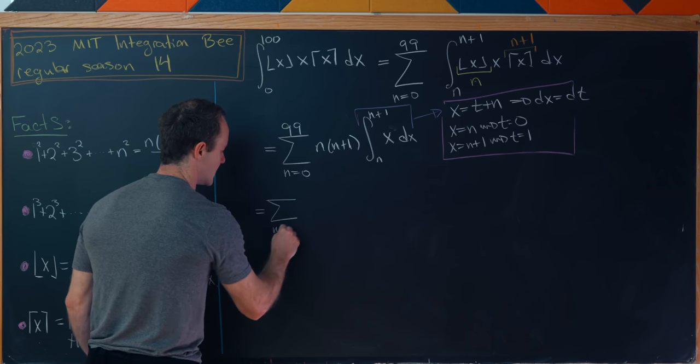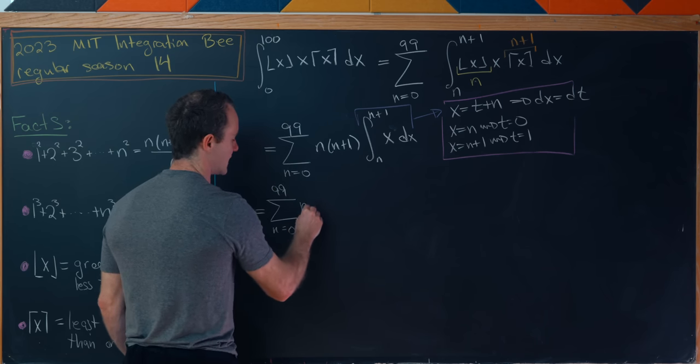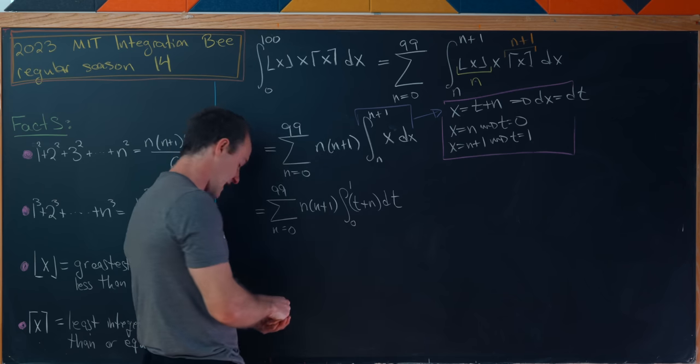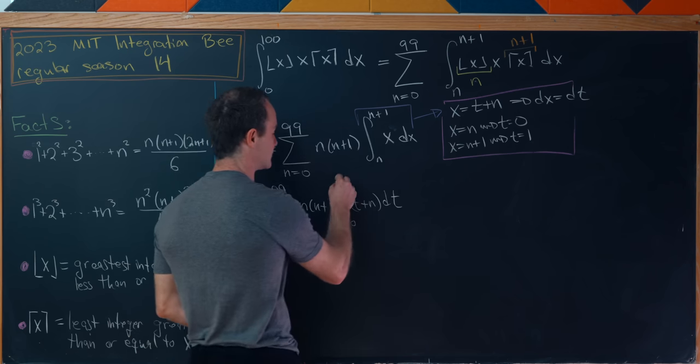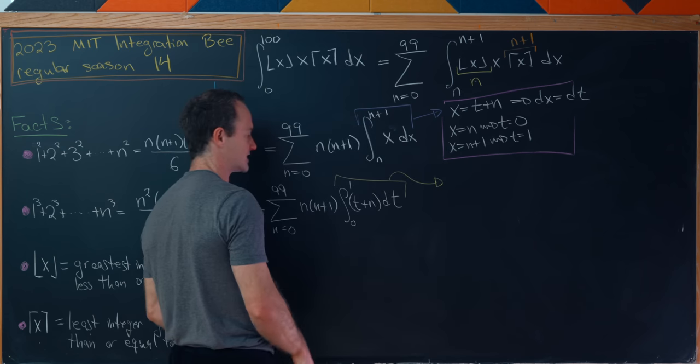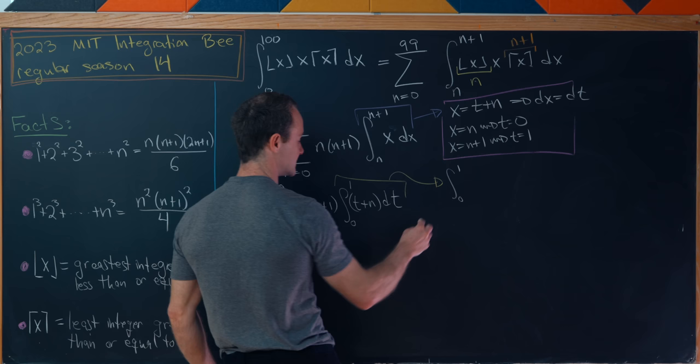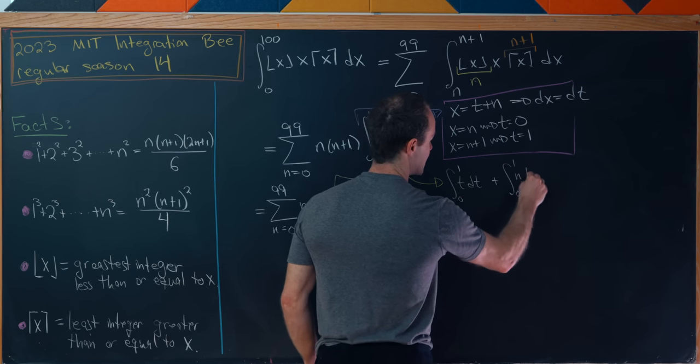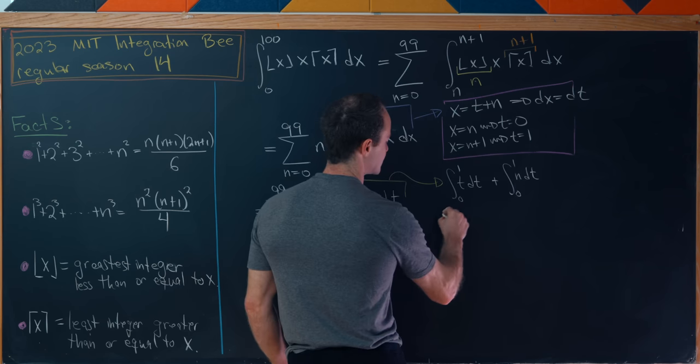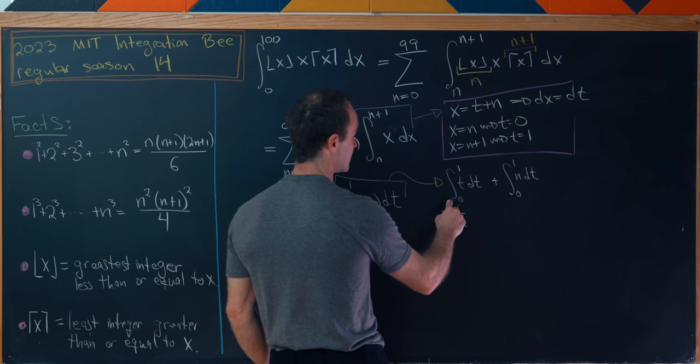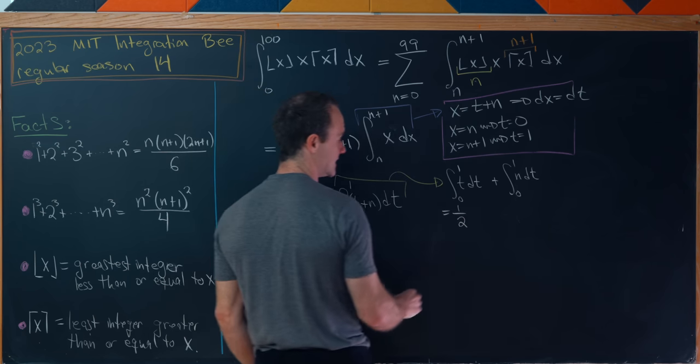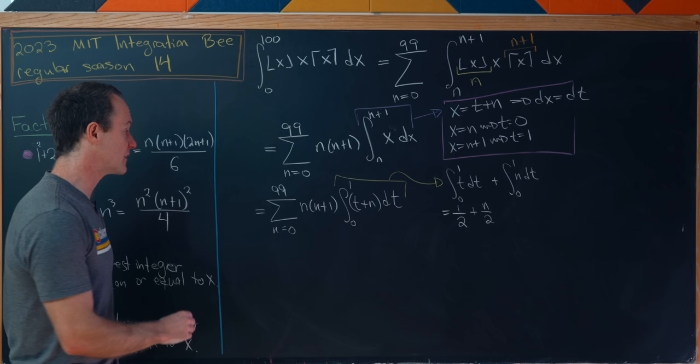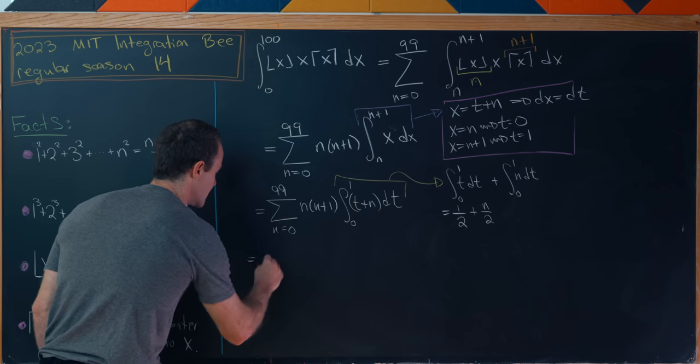And now plugging this all into our given integral will give us the following setup. We have this sum as n goes from 0 to 99, we still have n times n plus 1, but now we'll have the integral from 0 to 1. I think it's going to be advantageous to split this up. So that splits up into the integral from 0 to 1 of t dt plus the integral from 0 to 1 of n dt where that n is just a constant. So that's going to give us a half for this integral and then plus n over 2.